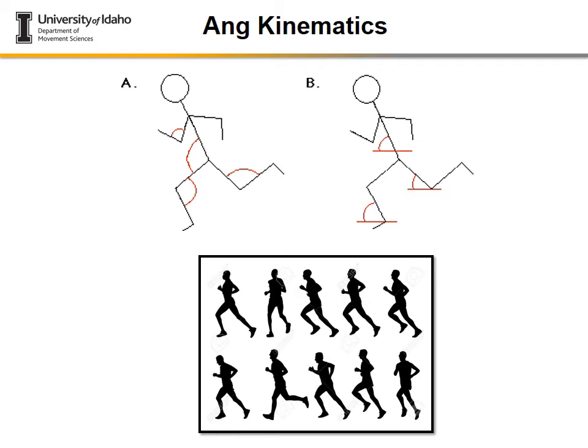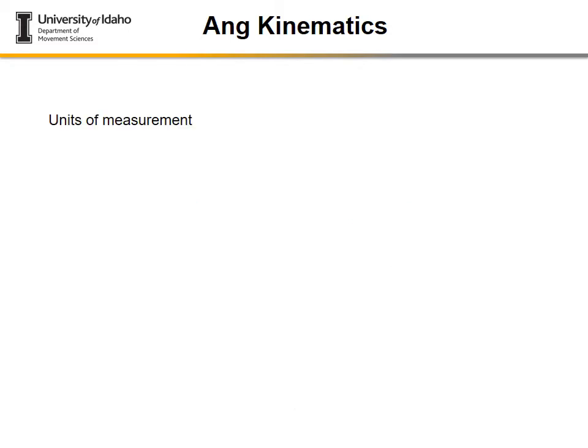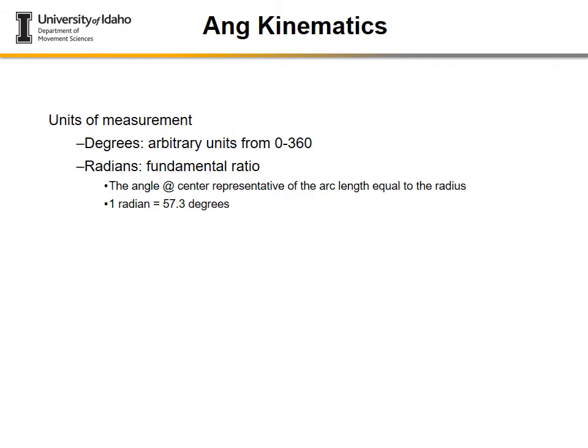It depends on what your research question is. Going forward, it's important to understand the units of measurement for angles. There are three basic units: degrees, radians, and revolutions. Revolutions are often used in gymnastics, skating, and skiing. Degrees are the most familiar, with a range of 0 to 360, where 360 degrees equals one full revolution.